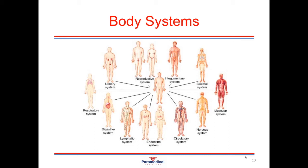The urinary system consists of the bladder, the kidneys, and the urinary tubules. The urinary system is important for maintaining the fluid balance within the body, the pH or levels of acidity or alkalinity, and for the excretion of waste products. The reproductive system consists of the sexual organs of the male and the female, and it's important for maintaining and continuing on the species.